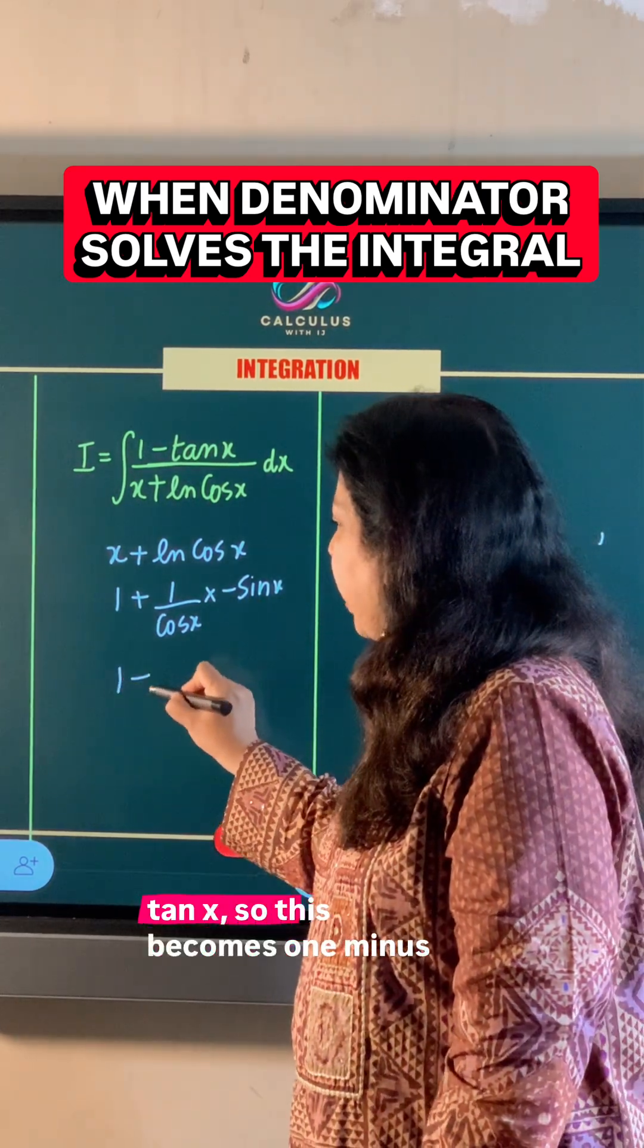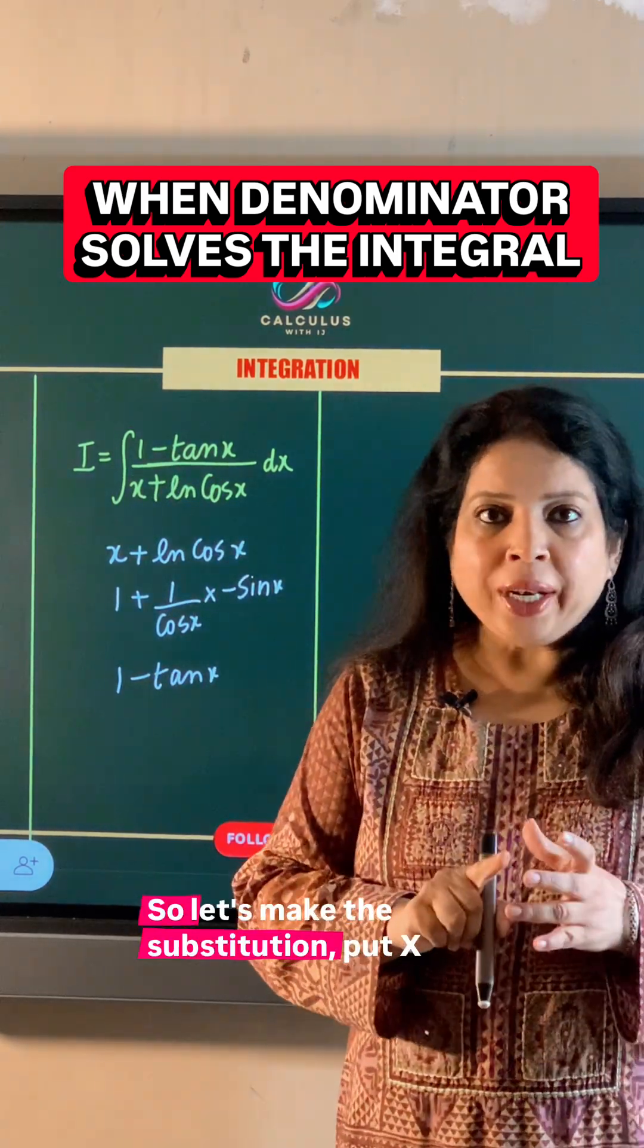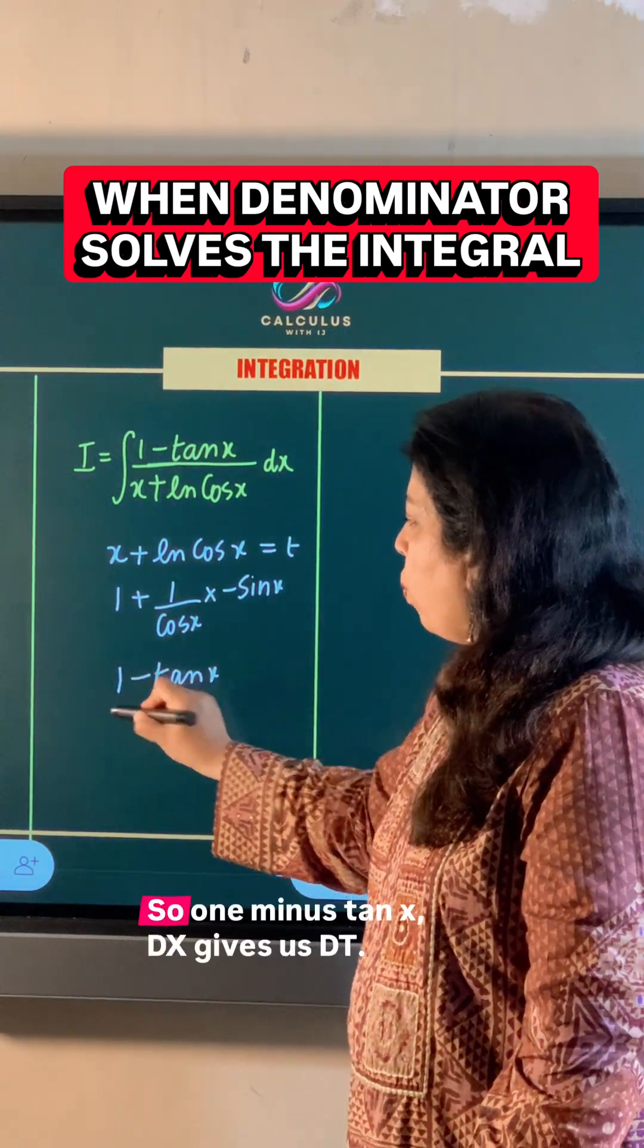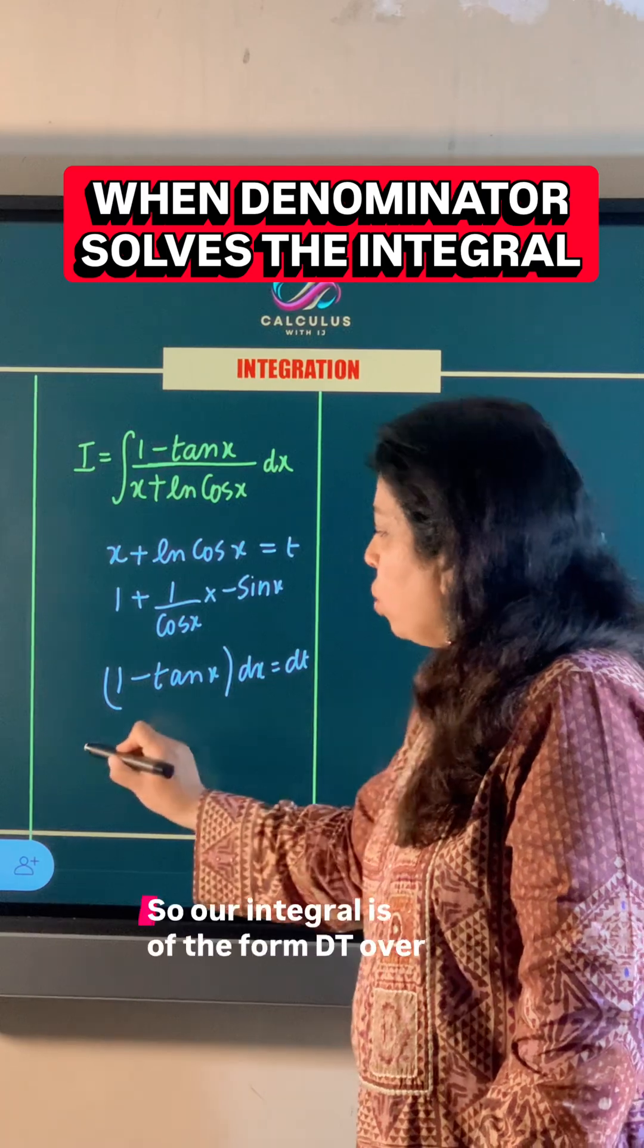So this becomes 1 minus tan x, which is exactly the numerator. So let's make the substitution: put x plus ln cos x is equal to t. So 1 minus tan x dx gives us dt. So our integral...